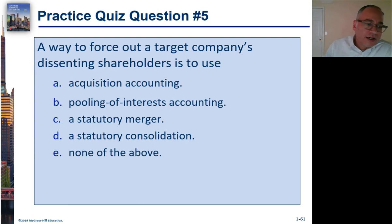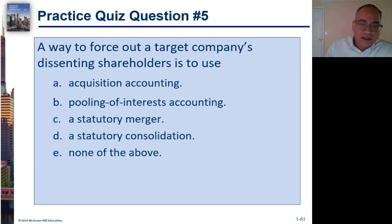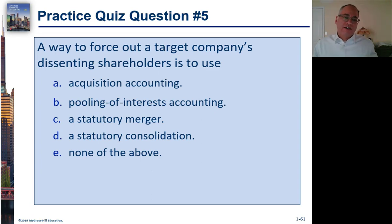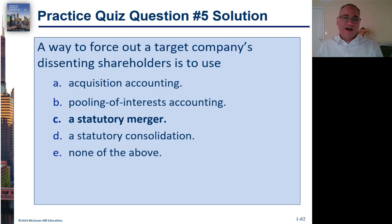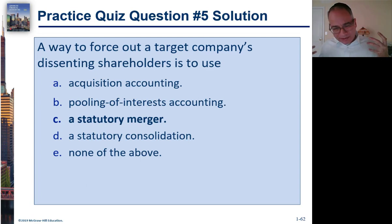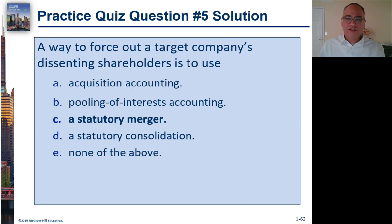A CPA exam question asks: a way to force out a target company's dissenting shareholders is to use (a) acquisition accounting, (b) pooling of interest accounting, (c) statutory merger, (d) statutory consolidation, or (e) none of the above. The answer is statutory merger — though between you and me, it's not a great question because I believe you can also do this as a statutory consolidation.